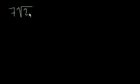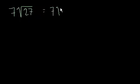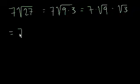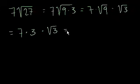What is 7 times the square root of 27? When I write the 7 right next to it, that just means times the square root of 27. Let's think about the factors of 27 and whether any of them are a perfect square. 3 is a factor of 27, but that's not a perfect square. 9 is. So that equals 7 times the square root of 9 times 3, which is the same as 7 times the square root of 9 times the square root of 3. That equals 7 times 3 — because the square root of 9 is 3 — times the square root of 3, which equals 21 times the square root of 3.